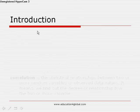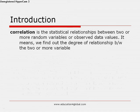Correlation means the combined relation between two or more variables. In other words, correlation is the statistical relationship between two or more random variables or observed data values. From correlation, we find out the degree of relationship between two or more variables — that is, how much the relation between the variables.